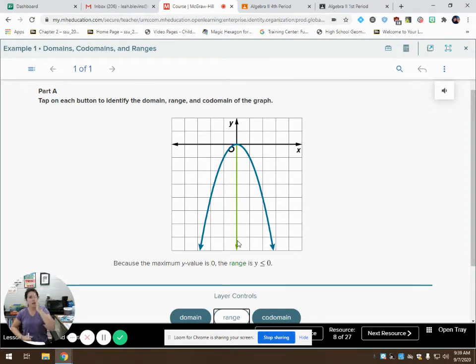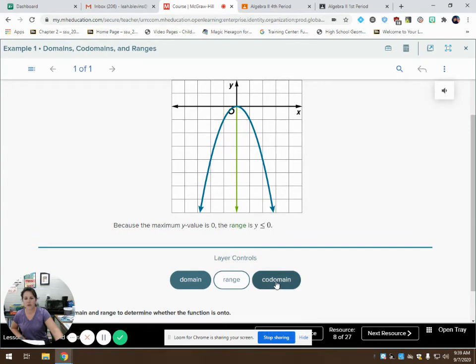So my domain, I looked at the x values that go along this way. My range is my y values that go along the y axis. So because the maximum y value that I have on this graph is zero, we say specifically that my range is y's less than or equal to zero. And what is the codomain? Well, once again, unless it's stated otherwise, the codomain is always all real numbers.